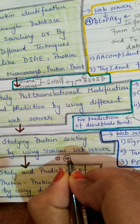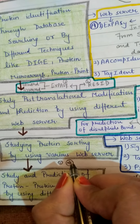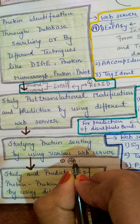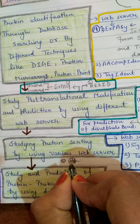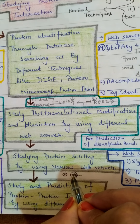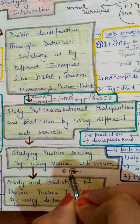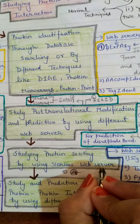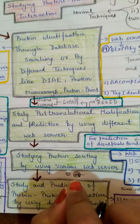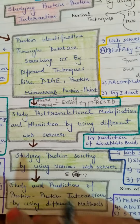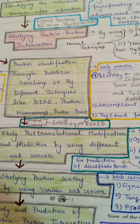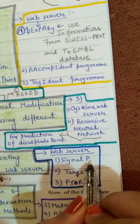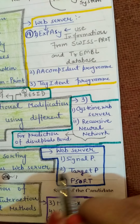The protein has to reach the target location within the cell. If the target is within the cell, it must be carried by a transport system. For example, consider a cell with many proteins and organelles. A protein in this cell will go to our ER, then to our Golgi apparatus. The Golgi apparatus determines whether the target is intracellular or extracellular. If it is intracellular, the protein will remain in the cell. If it is extracellular, it will go out of the cell. This is what we call protein sorting.